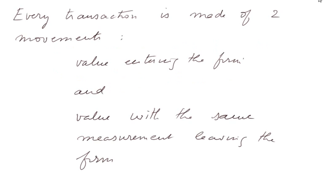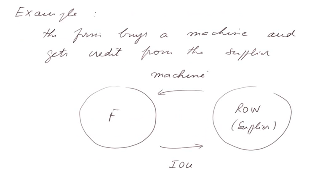Every transaction is made of two movements: value entering the firm and value with the same monetary measurement leaving the firm. For example, the firm buys a machine and gets credit from the supplier.